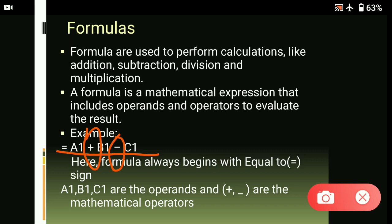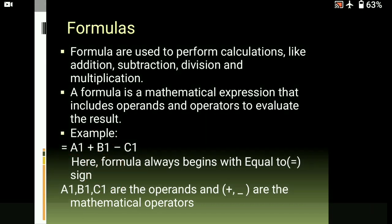And how can we write the cell address? In A1, here 'A' is the column letter and '1' is the row number. Let's move to our next heading.